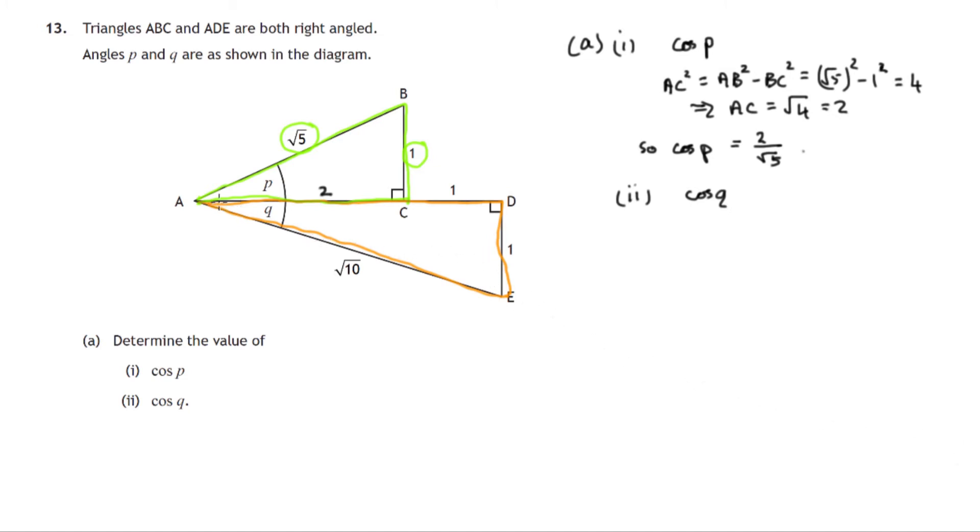But you'll notice that we know all three sides. We know the hypotenuse is root 10. We know this opposite side to Q is 1. And we know the adjacent to Q is 2 plus 1. That's 3. So we know all the sides. So we should be able to write down the cosine of Q. That's adjacent over hypotenuse. That's 3 over root 10. The 3 coming from the sum of AC and CD, 2 plus 1.